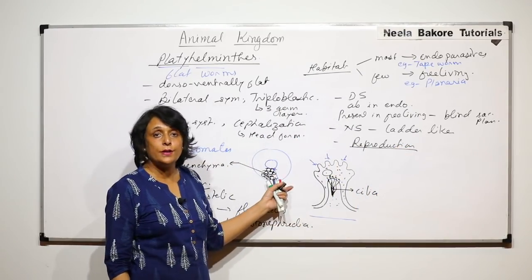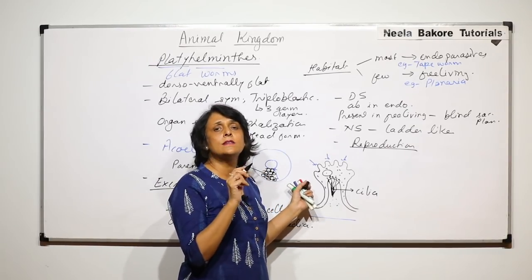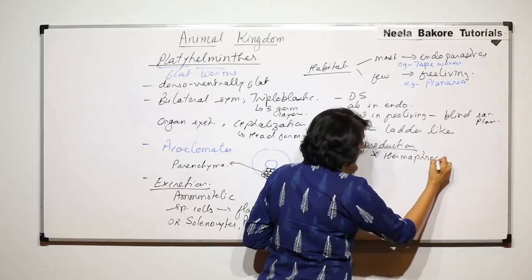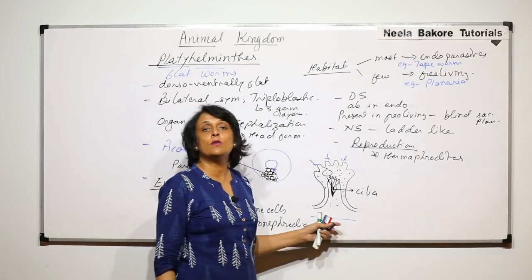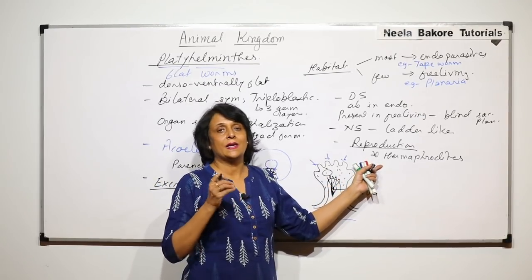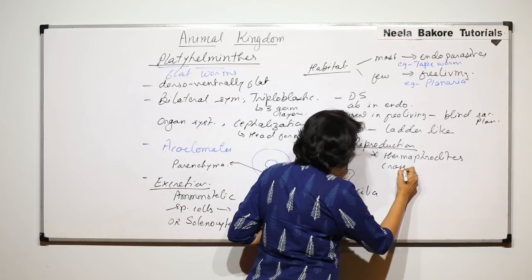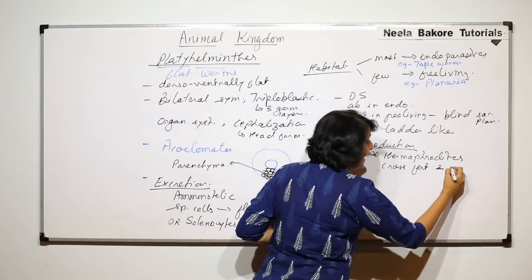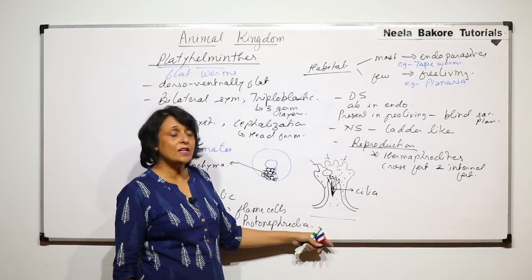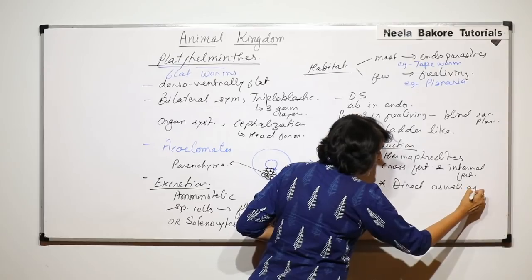Reproduction is important in this group because most of them are hermaphrodites — meaning one organism has both sex organs. Only a few are unisexual. However, their anatomy is such that they still favor cross fertilization and internal fertilization.